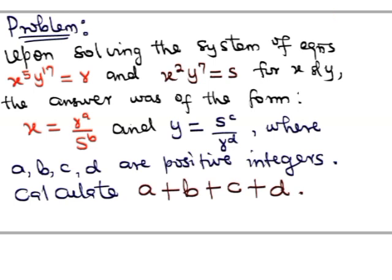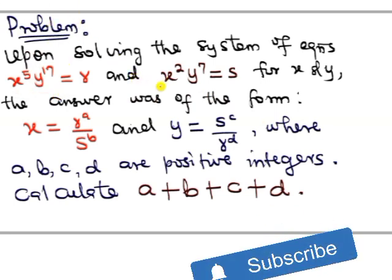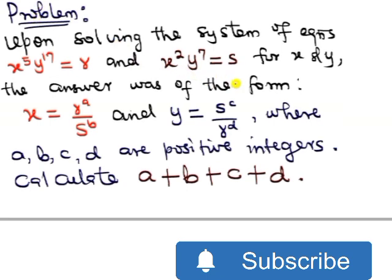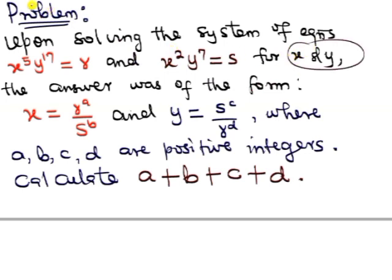Alright, this one says that upon solving the systems of equations given here, here are the systems we are given: x^5 * y^17 = r and x^2 * y^7 = s for x and y.